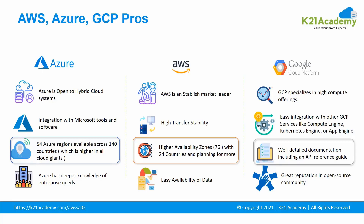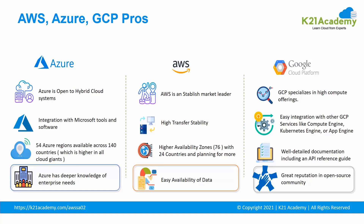AWS offers minimum data loss during service and storage transfers. In GCP, it is easy to integrate with other GCP services like Compute Engine, Kubernetes Engine or App Engine. Azure is on top when it comes to availability zones — it offers 54 Azure regions available in 140 countries, the highest among all cloud providers. AWS provides 76 availability zones across 24 regions and is planning for more. GCP is known for its detailed documentation including an API reference guide. Azure has deeper knowledge of enterprise needs and its services fulfill enterprise requirements. AWS provides easy availability of data from several availability zones so users can store data close to their location. GCP is committed to open source and portability and has a great reputation in the open source community.